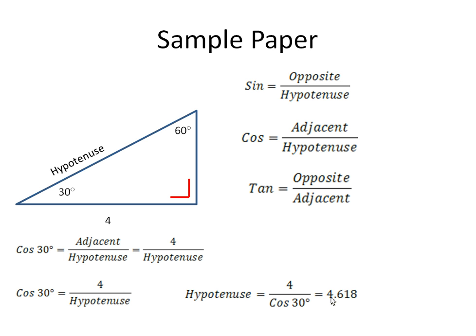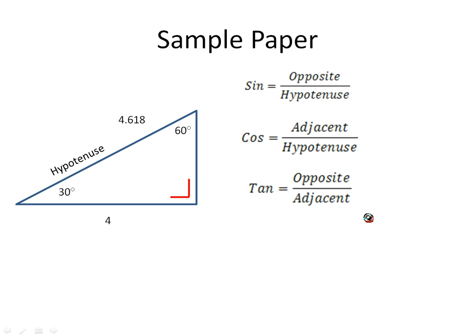The sine equals the opposite over hypotenuse. So now I have the adjacent, I have the hypotenuse. I could use the sine rule or I could use the tan rule. I could say the tan of 30 is the opposite over the adjacent. I could use either one of these, so I'm just going to take the tan.